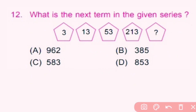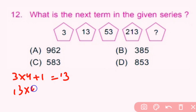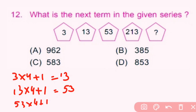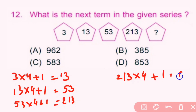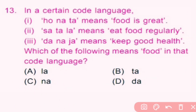Question number 12: What is the next term in the given series? The rule is: multiply by 4 then add 1. So 3×4+1=13, 13×4+1=53, 53×4+1=213, 213×4+1=853. So the question mark is 853. D is the correct answer.